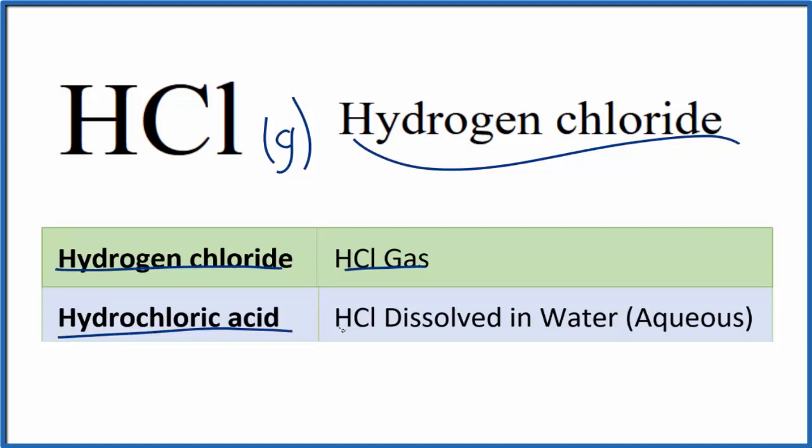Hydrochloric acid, it's still HCl, but it's dissolved in water, it's aqueous. So that's the difference. Usually you're just asked to draw the Lewis structure for HCl. But it's good to know the difference between hydrogen chloride and hydrochloric acid. So let's draw the Lewis structure for HCl.